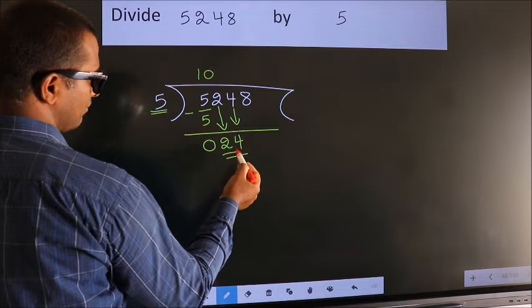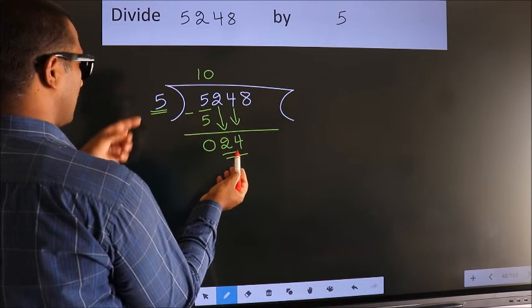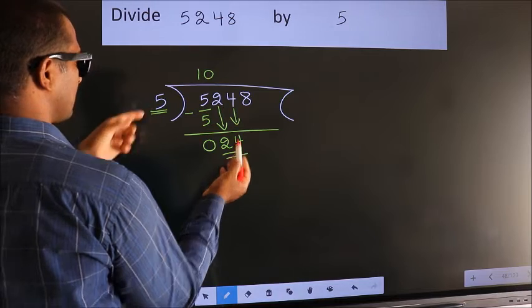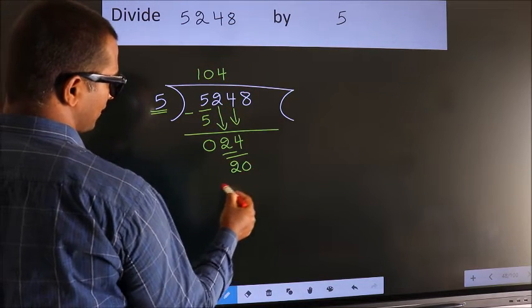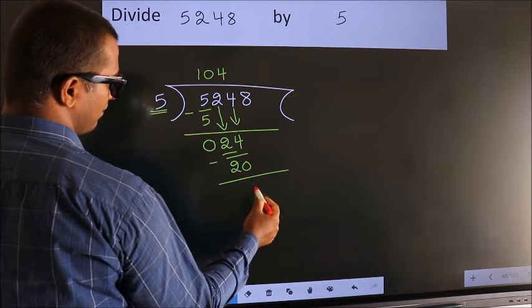So 24. A number close to 24 in the 5 table is 5 times 4 equals 20. Now we subtract. We get 4.